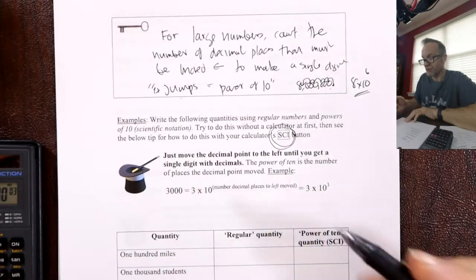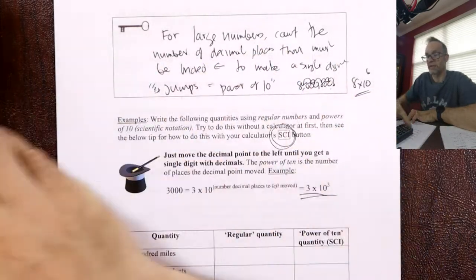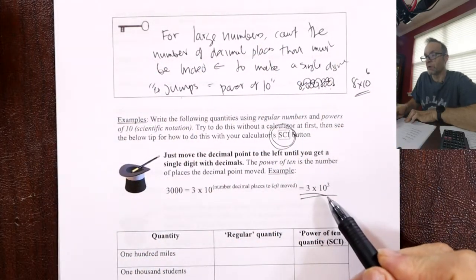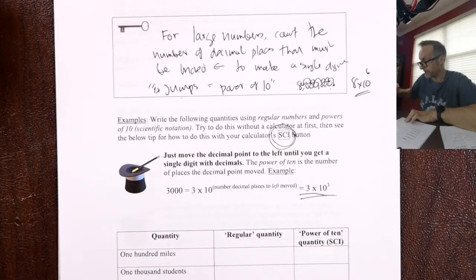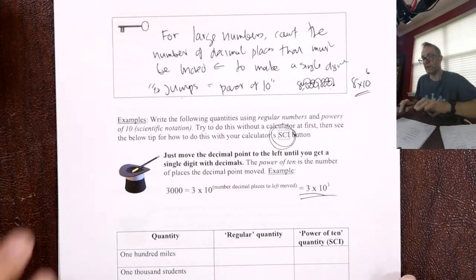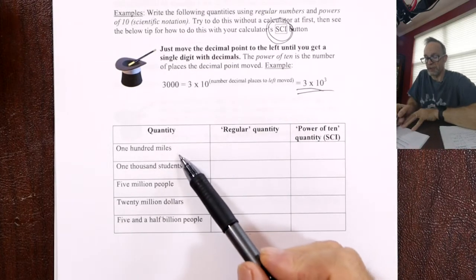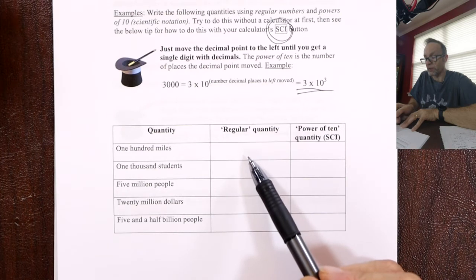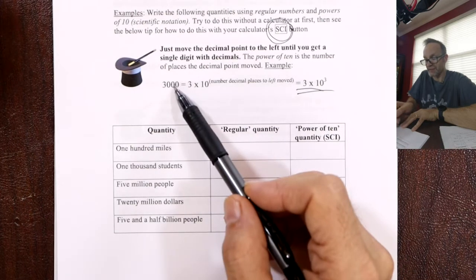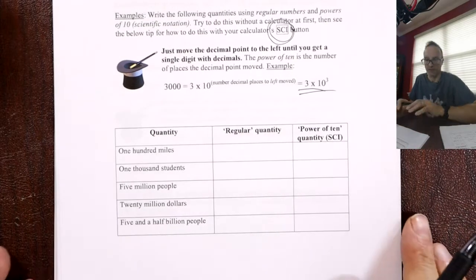When you write answers, make sure they're in true scientific notation. You can't write just what appears on the calculator — you've got to convert that to what we understand to be true scientific notation. Here are some examples: 100 miles, 1,000 students, etc. Turn them into a regular quantity and then into powers of 10 notation.